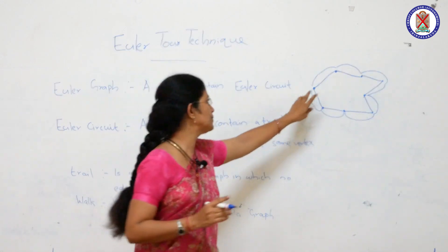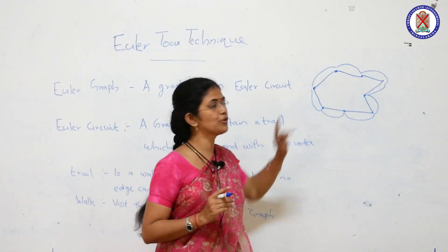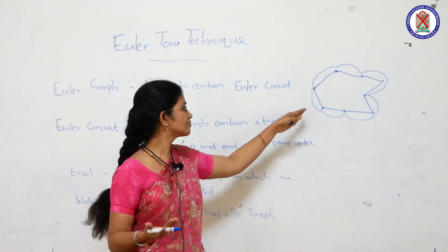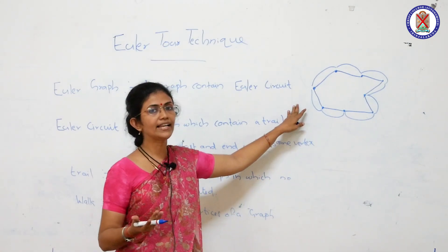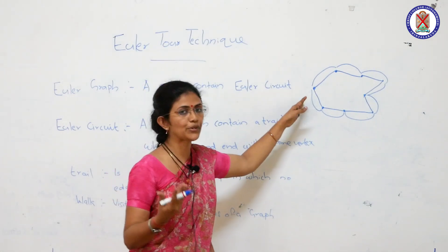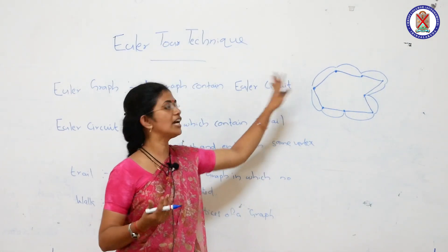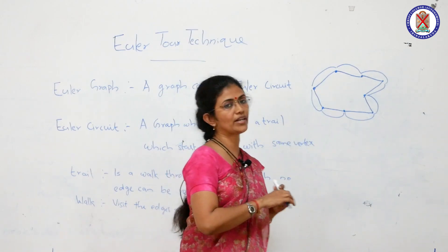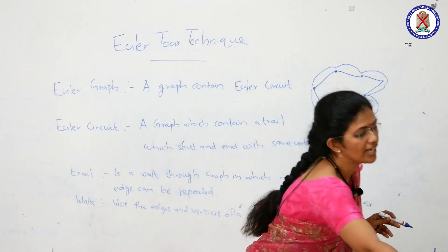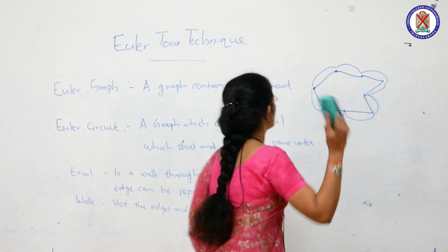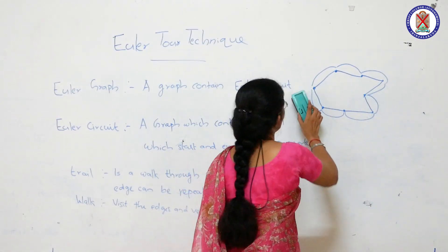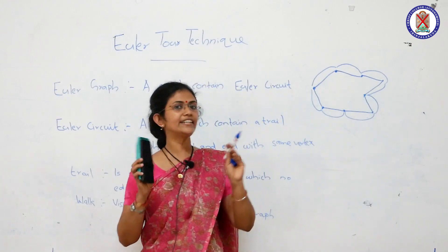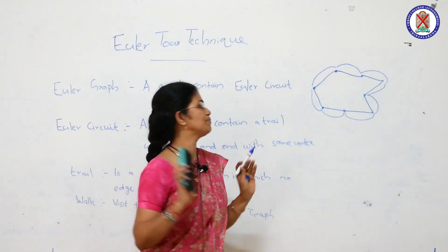What we see now is that the path traversed was an Euler circuit. We have made some modifications along the way. The technique applied here is the Euler circuit technique.